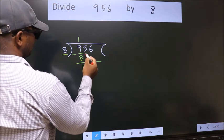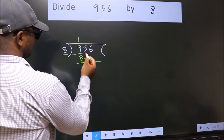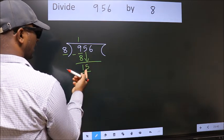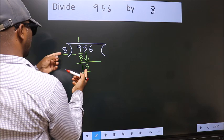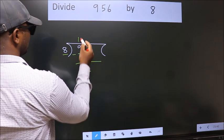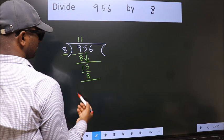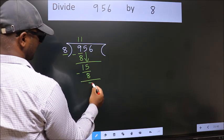After this, bring down the beside number. So, 5 down. 15. A number close to 15 in 8 table is 8 once 8. Now, we subtract. We get 7.